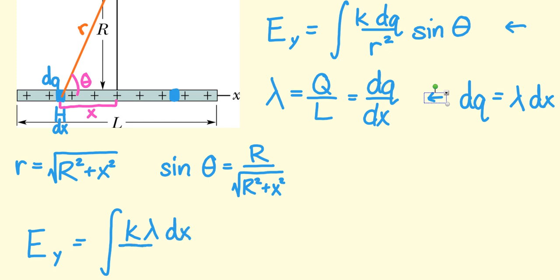Now this expression was all over R squared. R squared can be expressed as capital R squared plus x squared, just getting rid of that square root since I have little r squared. Now we said that the sine of theta could be expressed as capital R divided by the square root of R squared plus x squared.